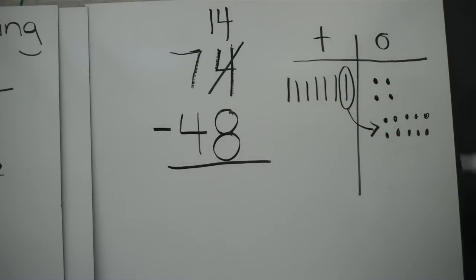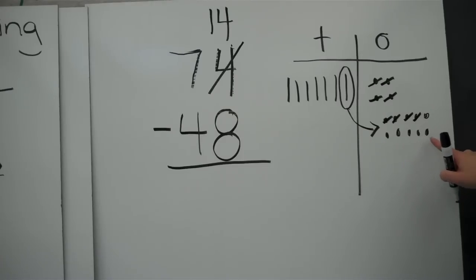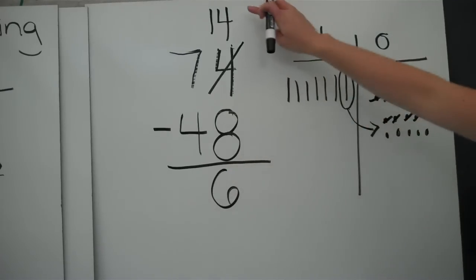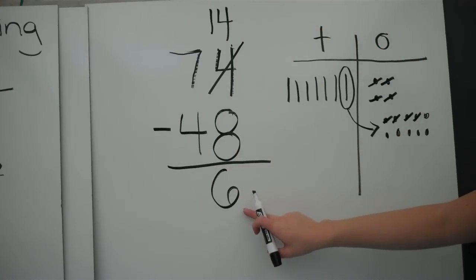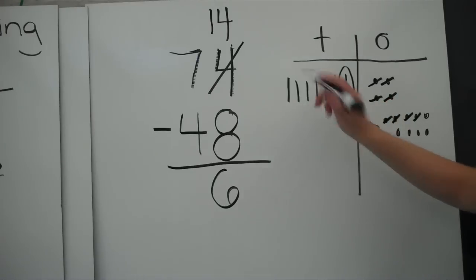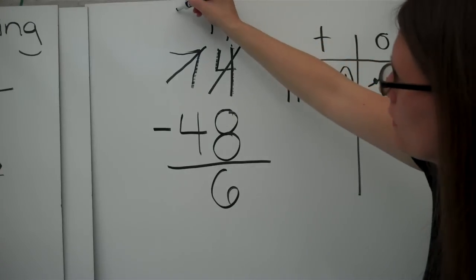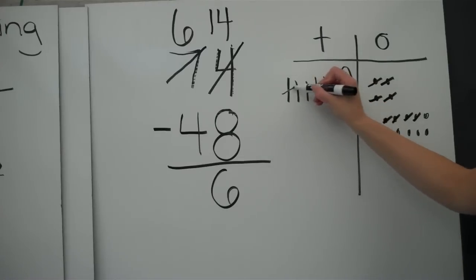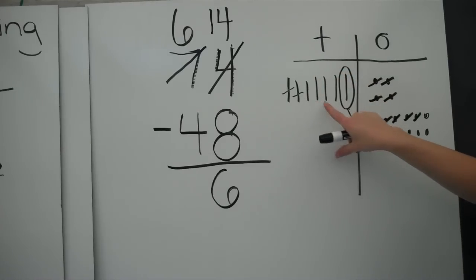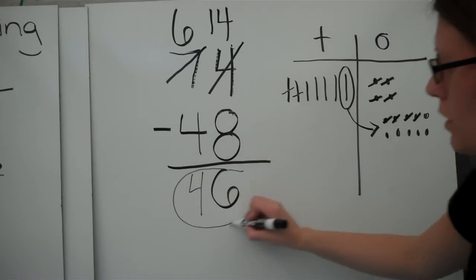I can take eight away — one, two, three, four, five, six, seven, eight — and I have six left. I know that fourteen minus eight equals six. Now, do I still have seven tens? No, I only have six tens. When I subtract four tens, I end up with two tens left. My answer is forty-six.